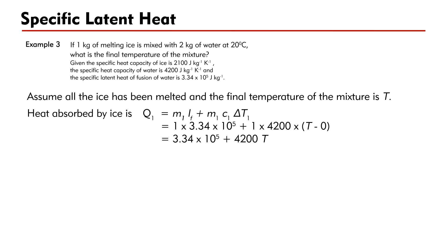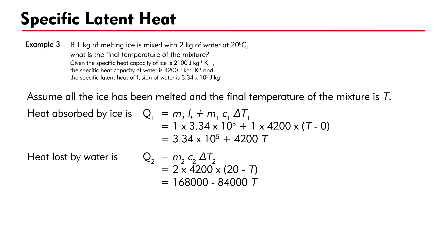Therefore, the heat absorbed by the ice is Q₁ = M₁×L_F + M₁×C₁×ΔT₁ = 1×3.34×10⁵ + 1×4200×(T−0) = 3.34×10⁵ + 4200T. The heat released by the water as it cools is Q₂ = M₂×C₂×ΔT₂ = 2×4200×(20−T) = 168,000 − 8400T.